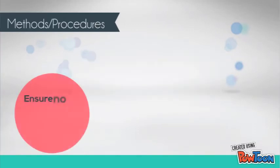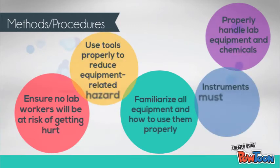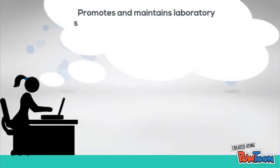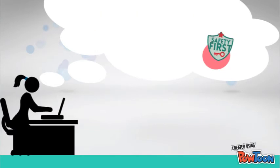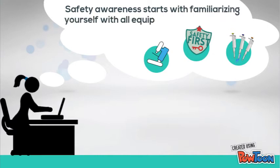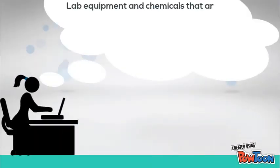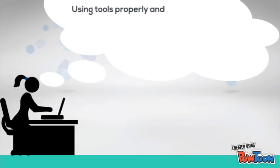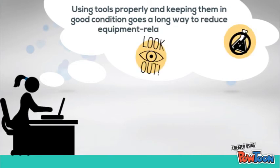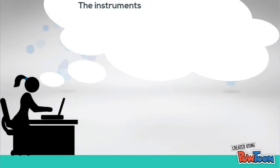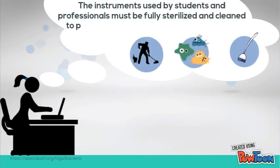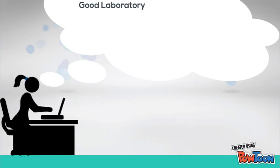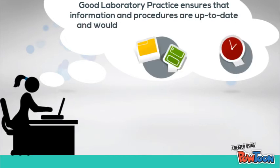Promoting and maintaining laboratory safety. Good laboratory practice promotes and maintains laboratory safety by ensuring no lab workers will be at risk of getting hurt. Safety awareness in the lab starts with familiarizing yourself with all equipment and how to use them properly. When lab procedures aren't followed properly and equipment and chemicals are improperly handled, it can result in personal injury and even death. Using tools properly and keeping them in good condition reduces equipment-related hazards. Instruments used by students and professionals must be fully sterilized and clean to prevent the dangerous spread of bacteria. Good laboratory practice ensures that information and procedures are up to date and would prevent cross-contamination.